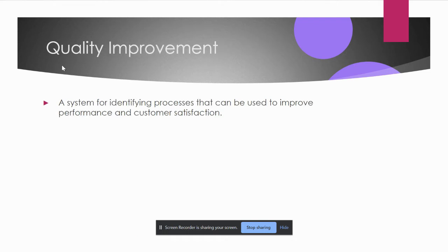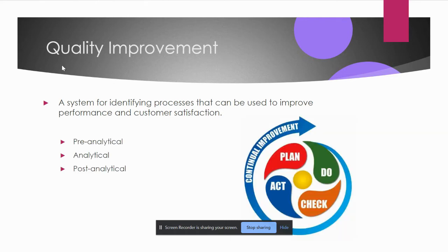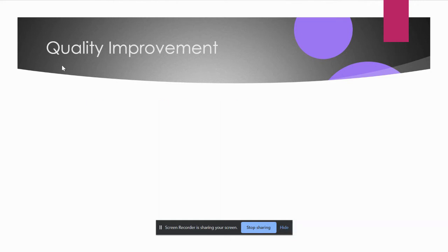Quality needs to be continuously improved once you have a QC and QA system in place. To improve quality, you need to work on your pre-analytical, analytical, and post-analytical areas. It follows a PDCA cycle — Plan, Do, Check, Act — which is a continuous improvement loop where you plan, perform, check results, act on findings, and return to planning the next level of improvement.